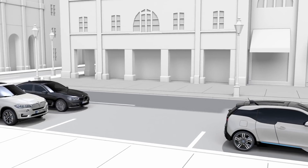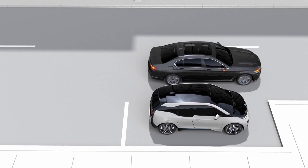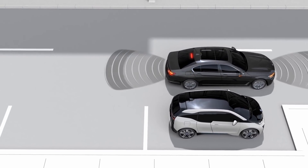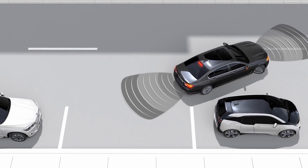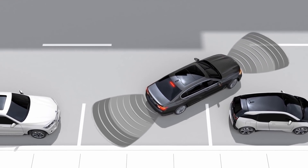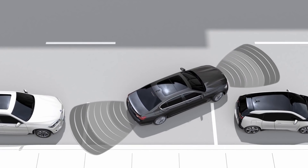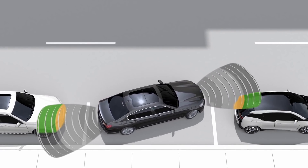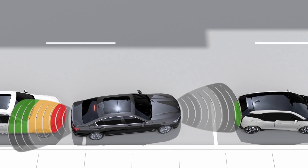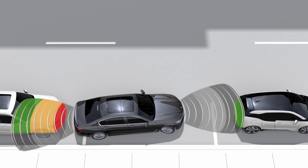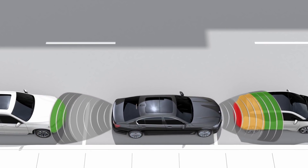Park Distance Control supports you during parking and maneuvering. The system monitors the approach to an object, and the approach is indicated with acoustic warning tones and can be shown schematically on the control display. The warning tones and display change continually with the distance between the vehicle and the object.